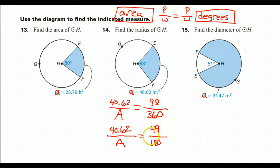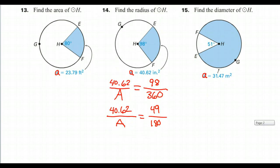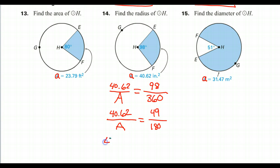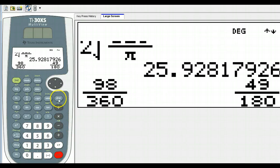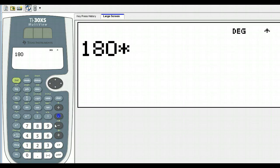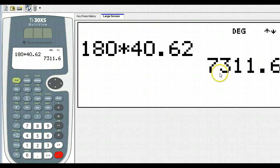Time to cross multiply. Now I've got decimals and everything, so I'm just going to deal with the decimals. So 49 times A as I cross multiply. So I'm going to have 49A equals. Now going this way, I'm multiplying 180 times 40.62.